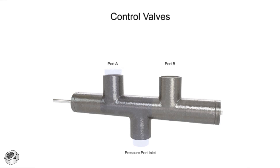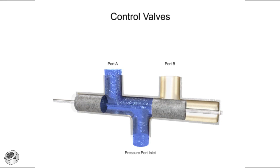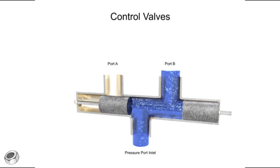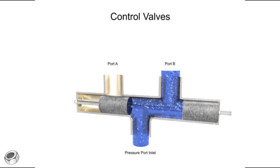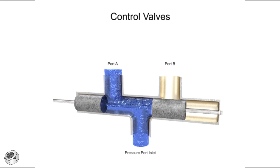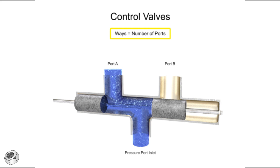Directional control valves are used to stop, start, route, and divert fluid streams without affecting the pressure level or the flow rate of the system. Directional control valves are identified by the number of ways that fluid can flow and the number of positions the valve can produce. A way refers to the number of active porting connections, called ports.